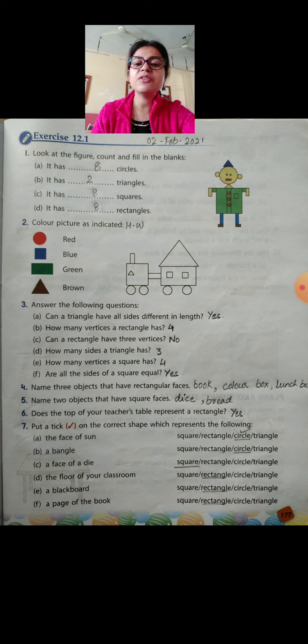How many vertices does a rectangle have? Very simple. It has 4 vertices. Can a rectangle have 3 vertices? No. Then it will be a triangle.